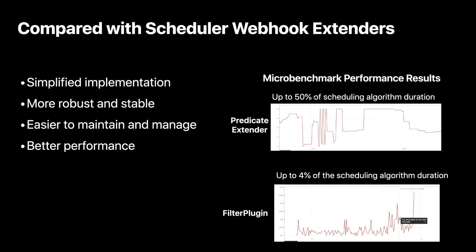Finally, without running as a separate component and without the marshalling and demarshalling overhead, performance can be improved significantly. Here is a benchmark performance result. The top shows the webhook implementation — the percentage of time spent on the predicate logic extender over the entire scheduling algorithm time — it's almost up to 50%. By contrast, the filter plugin only takes up to 4% of the scheduling algorithm duration, which is a very significant performance improvement.